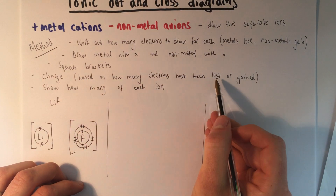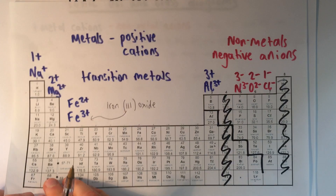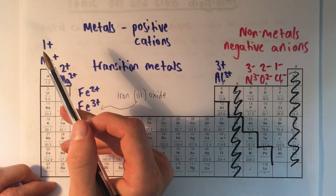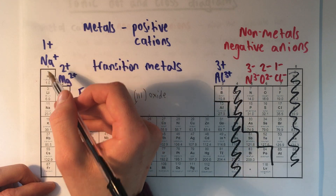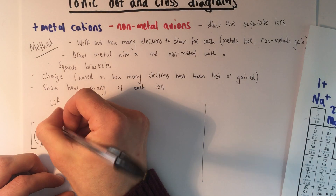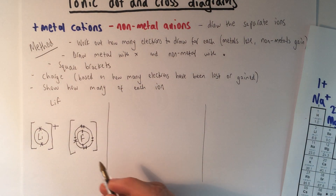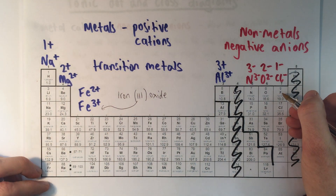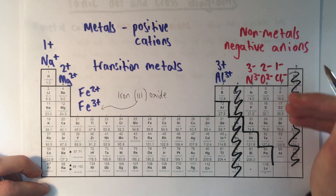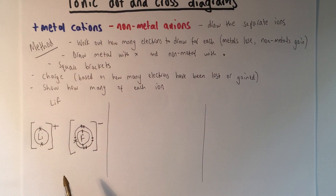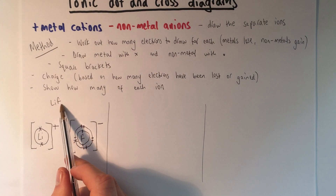The charge is based on how many electrons have been lost or gained. You can use a periodic table to work out what charge a different ion will have — it corresponds to the group number. Lithium is in group one, so it lost one electron and has a charge of one plus, which I write as just plus. Fluorine is in group seven, so the fluoride ion has a charge of one minus, because it's gained one electron, written as just minus. That is the finished dot and cross diagram for lithium fluoride, because there's only one of each ion in the formula.